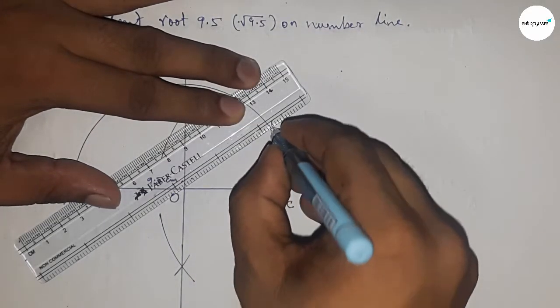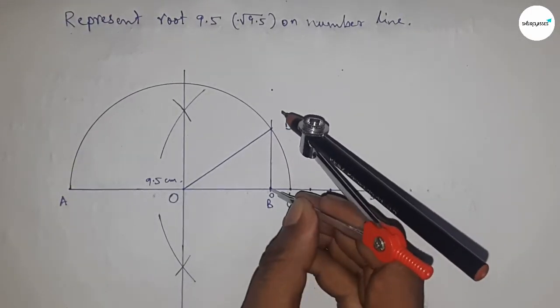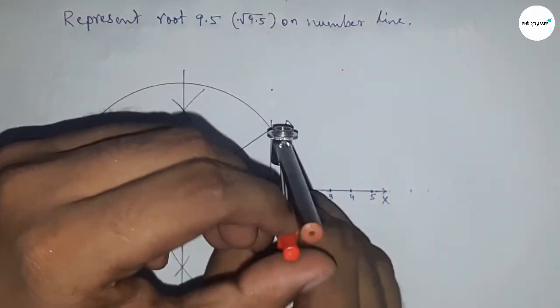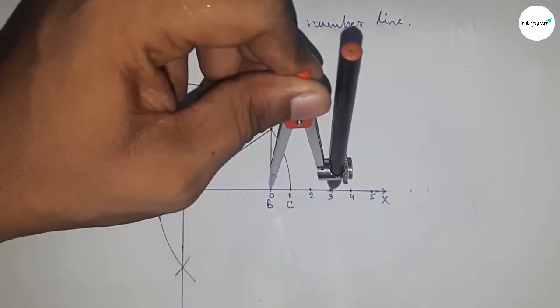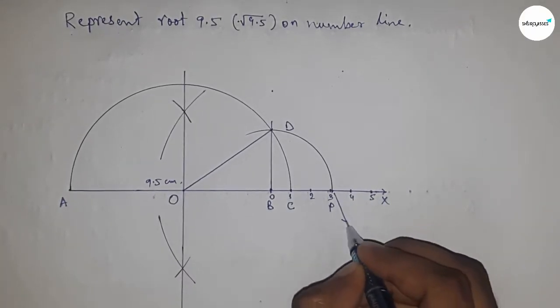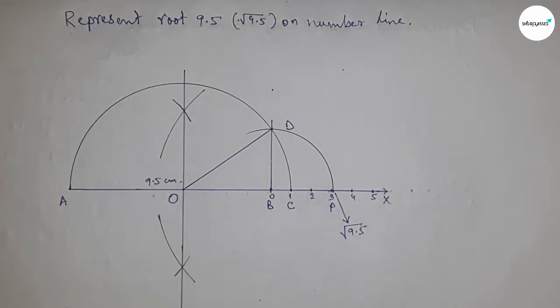Join O and D. Now take the length BD with a compass to draw an arc which meets the number line at point P. This is the representation of √9.5 on the number line.